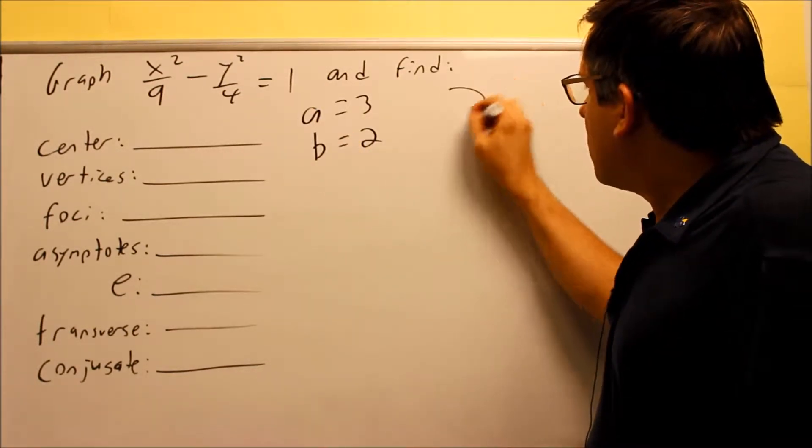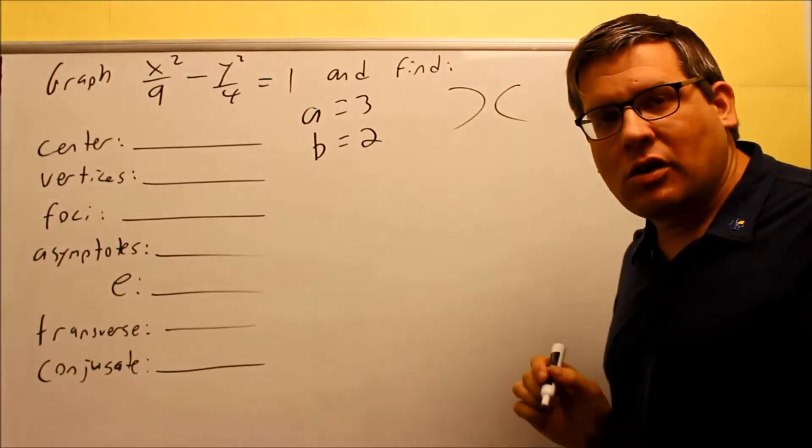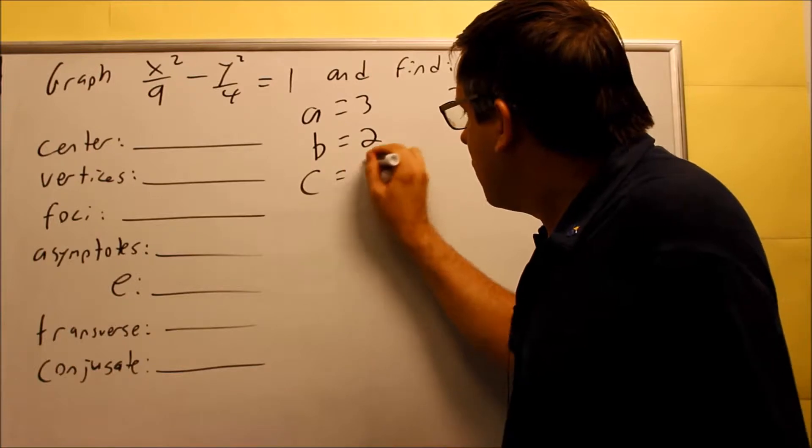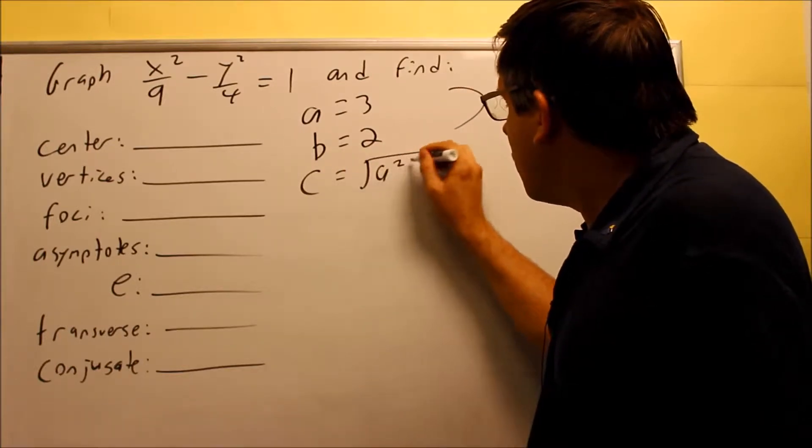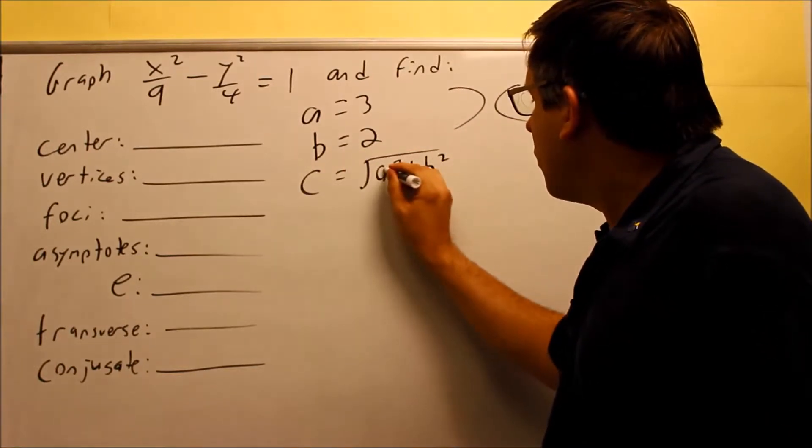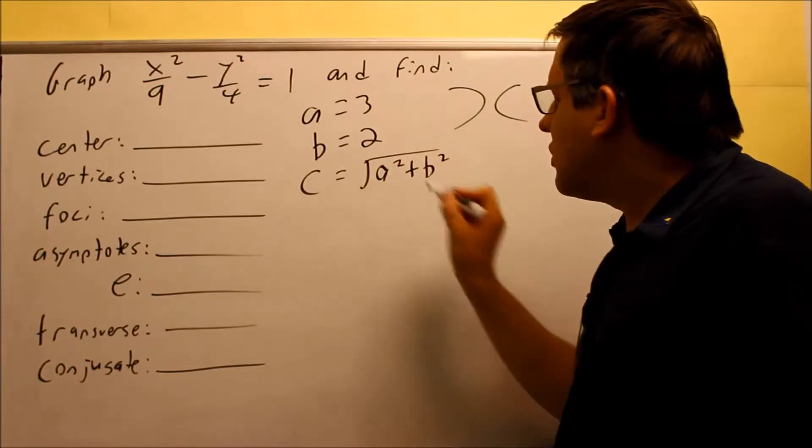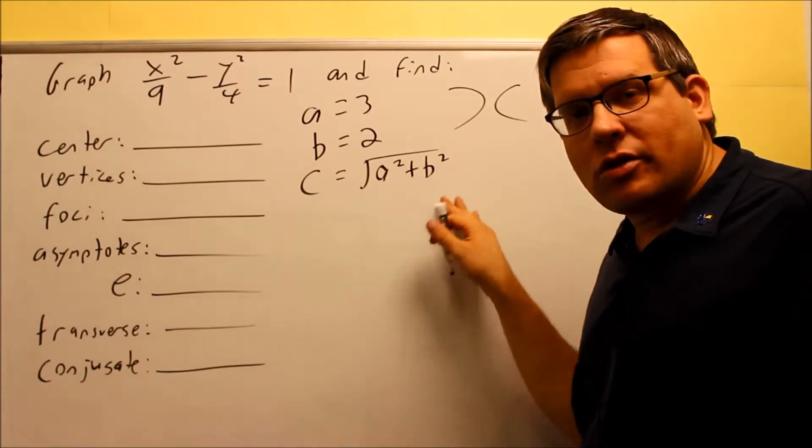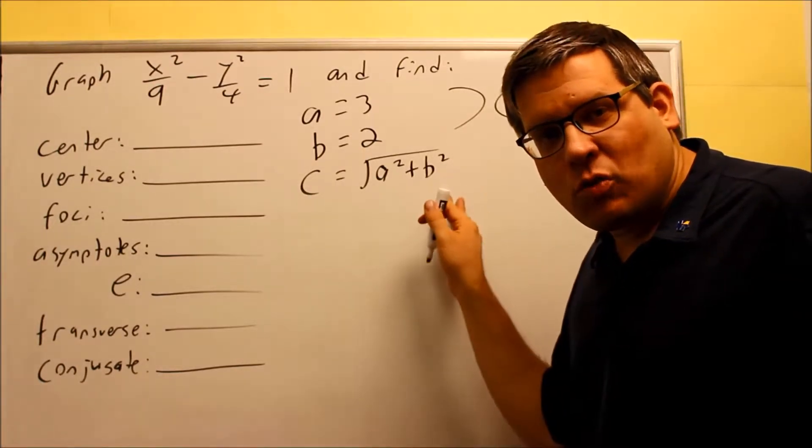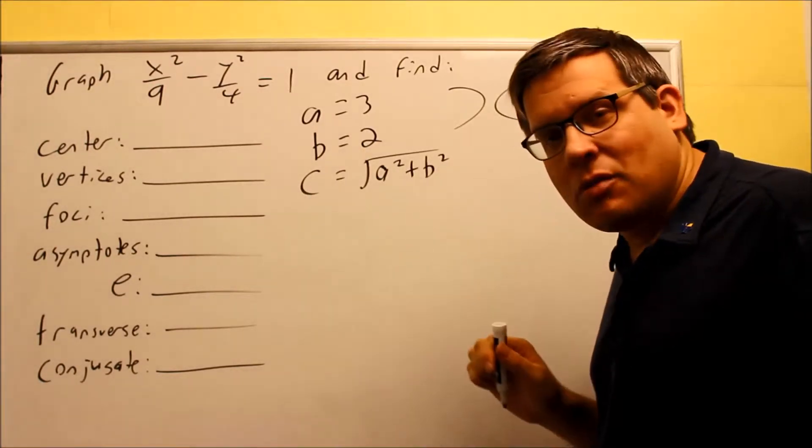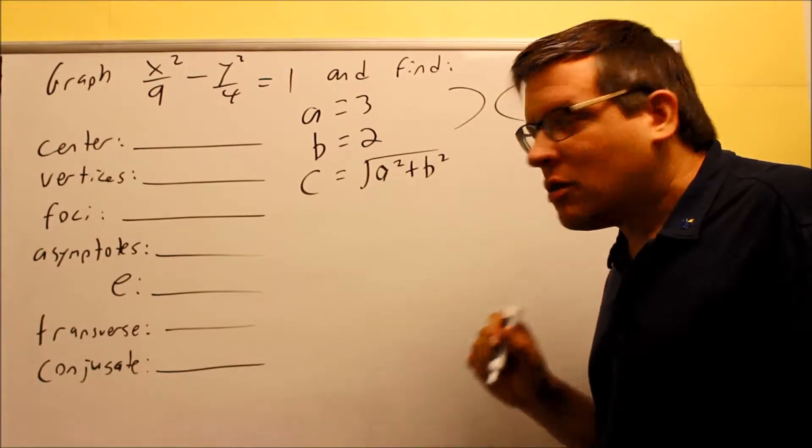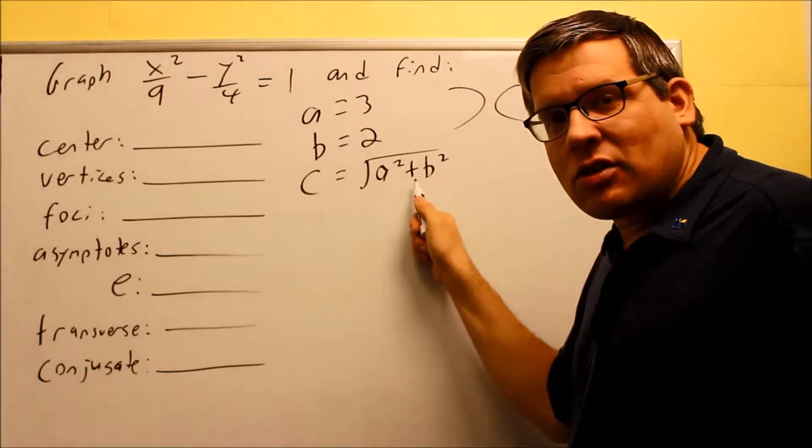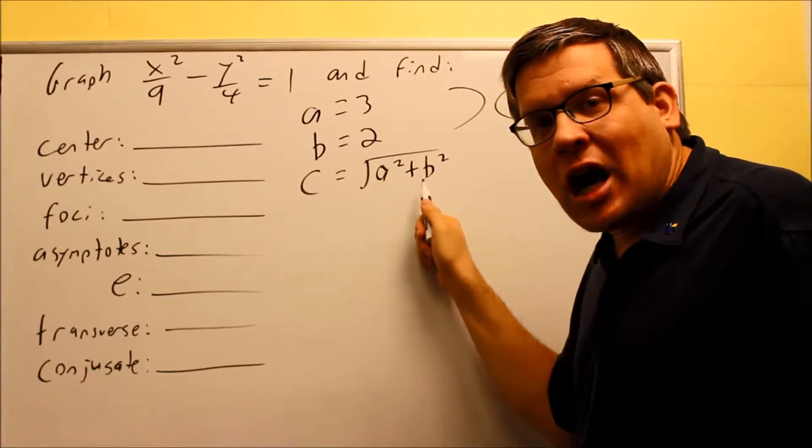We have a different formula for the c value. The formula for c is the square root of a squared plus b squared. To make sure you don't get this confused with the ellipses one, because the ellipses one has a minus in it, the sign that's inside here, inside the square root, always has to be opposite sign of the one that's in the formula itself.